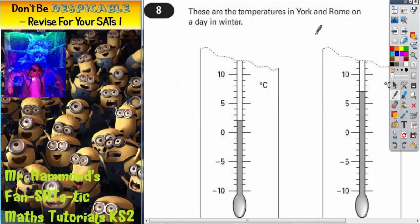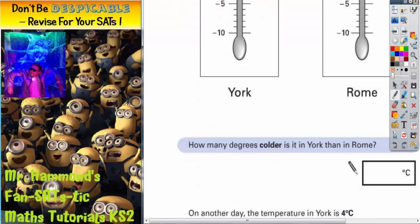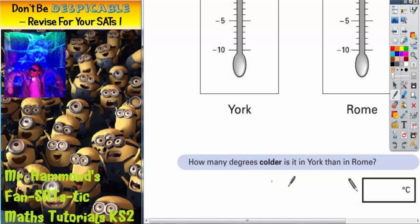Question 8. These are the temperatures in York and Rome on a day in winter. We've got York on the left, Rome on the right. It says, how many degrees colder is it in York than in Rome?